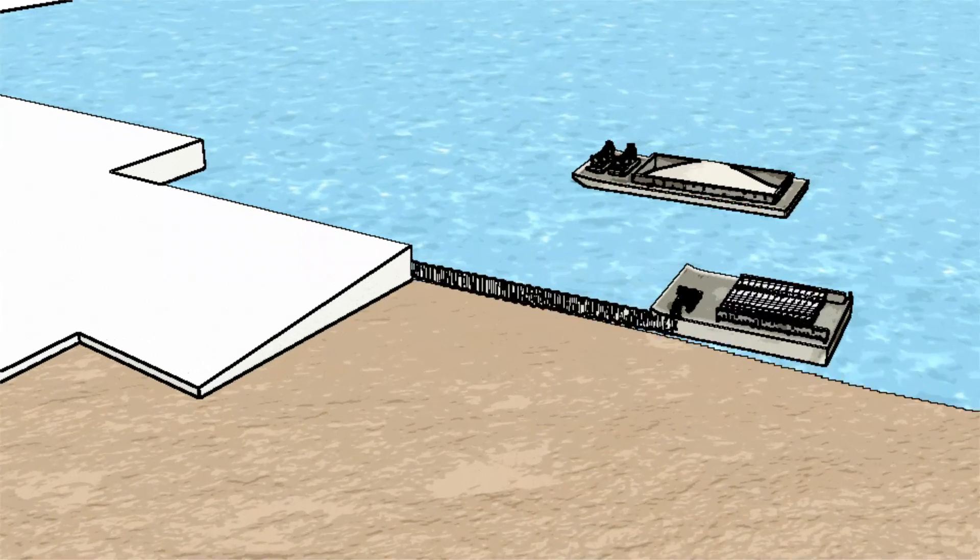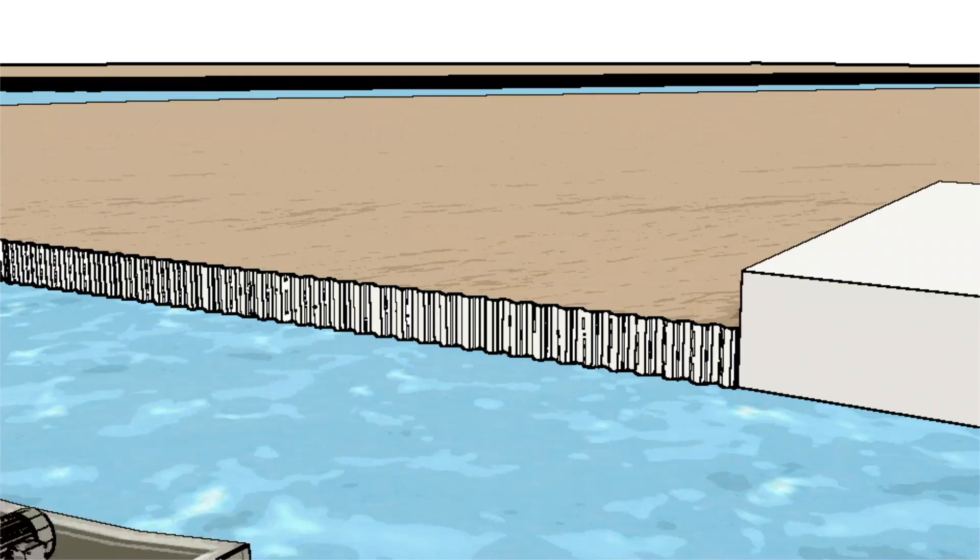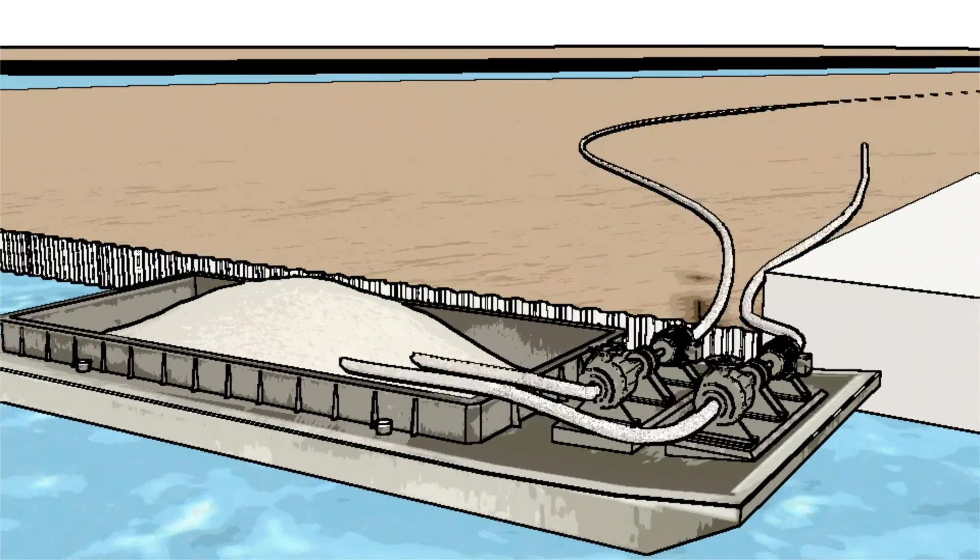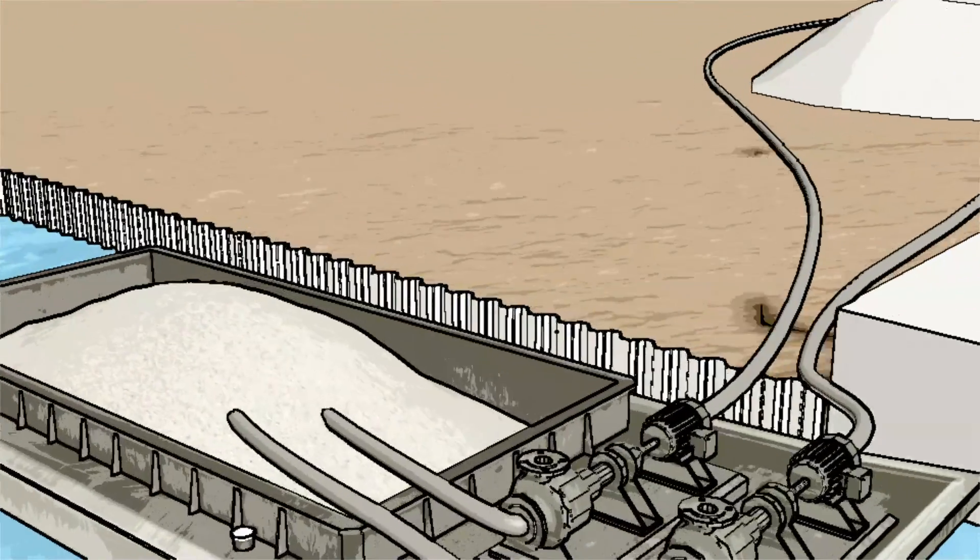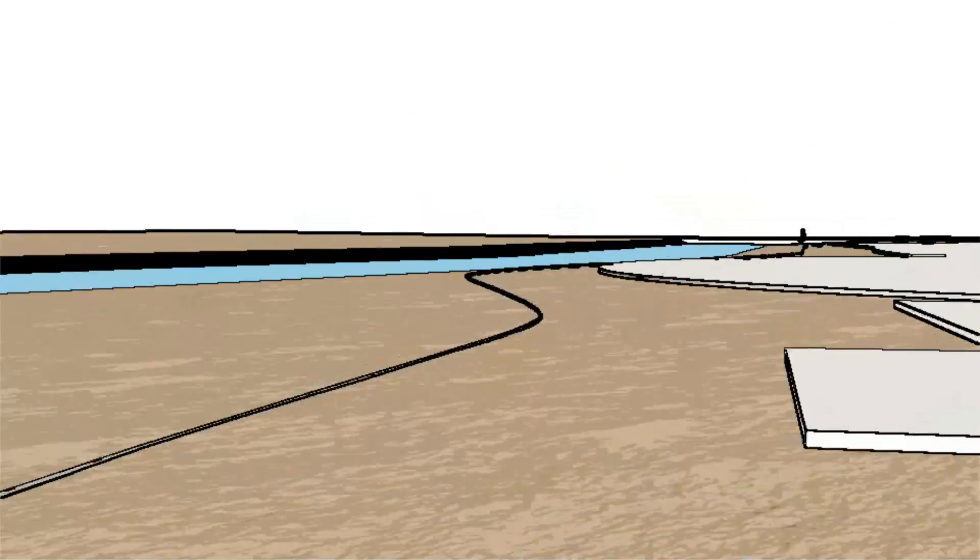A pumping barge will be stationed permanently at the Southern End, pumping backfill materials delivered by another barge to the Northern and Southern stockpile areas.